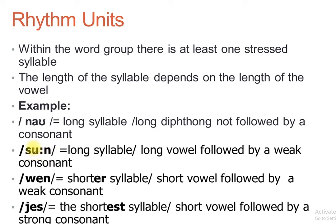To repeat: this long vowel sound is considered a long syllable in all cases because the vowel is long. But the length is relative. If after this long vowel there comes a voiced consonant, the vowel is longer. If instead there comes a voiceless consonant, the vowel is shorter — because the voiceless consonant is strong and affects the vowel's length. So: voiced consonant following = longer vowel; voiceless consonant following = shorter vowel.